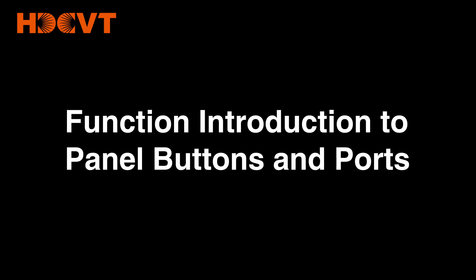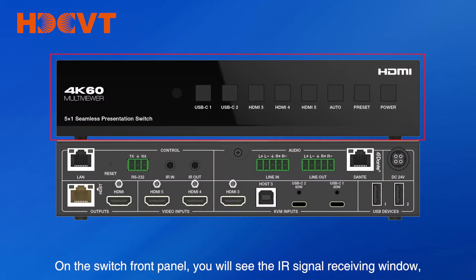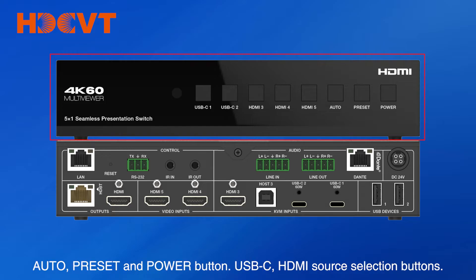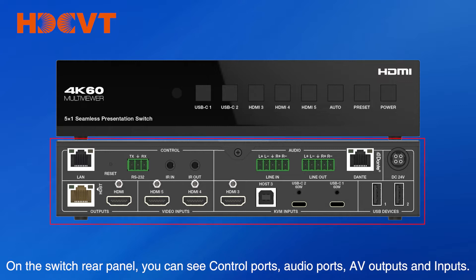Now let's take a quick look at the panels. On the switch front panel, you will see the IR signal receiving window, auto, preset and power button, and USB-C and HDMI source selection buttons. On the switch rear panel, you can see control ports, audio ports, AV outputs and inputs.